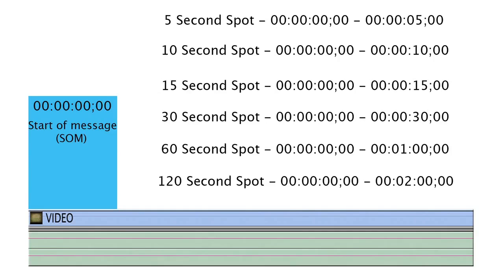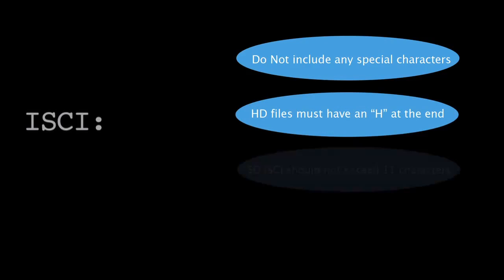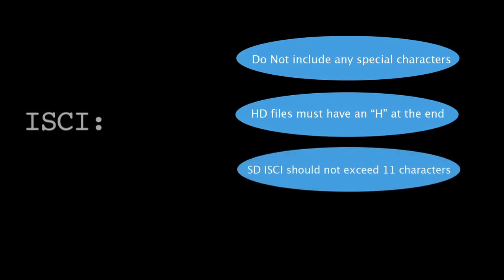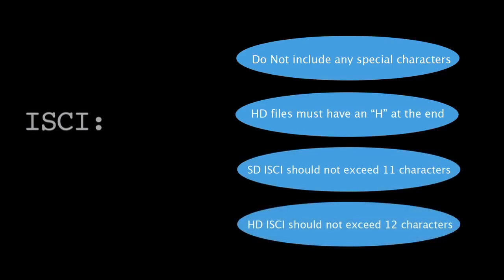On screen you will see examples of what your timecode will look like depending on the length of your spot. Ad ID is key — this identifies your video and is a unique code. The Ad ID must have no dashes or special characters. If your file is HD, it should include an H at the end.